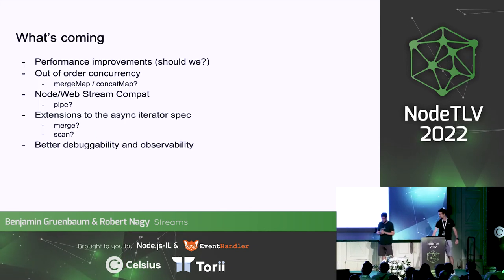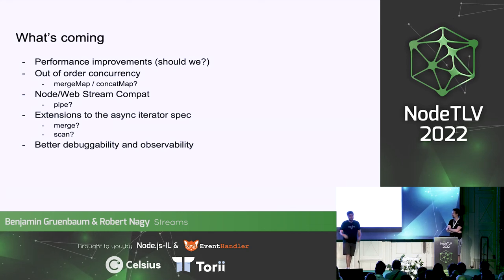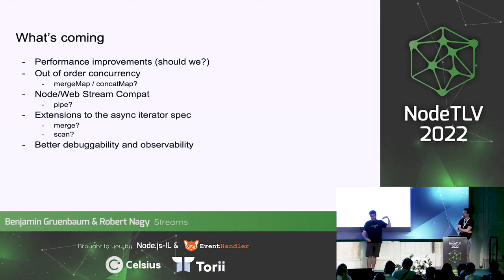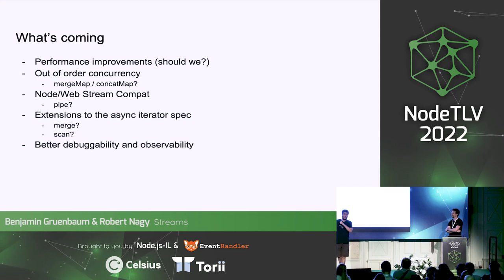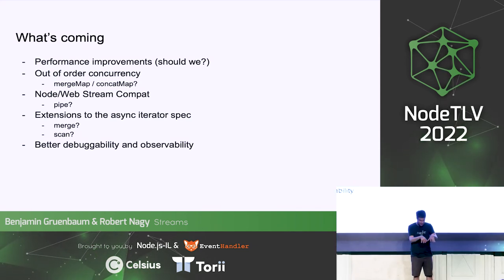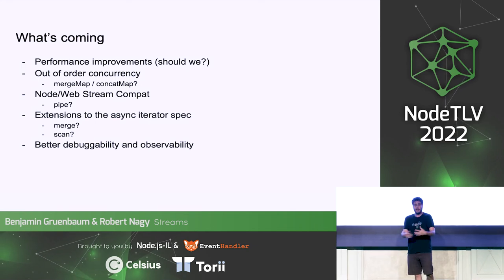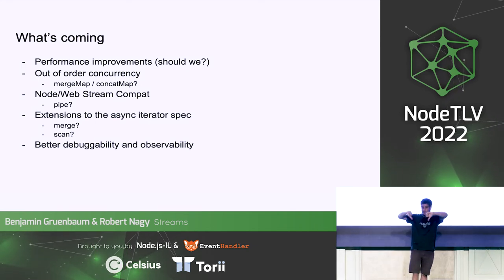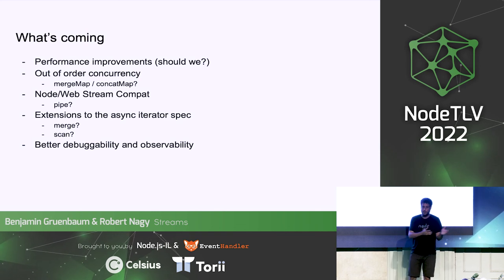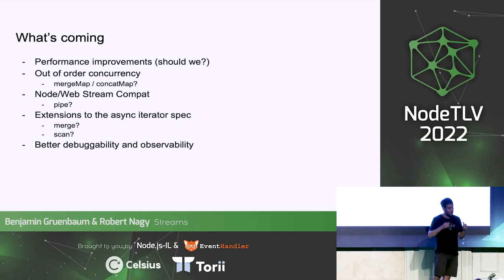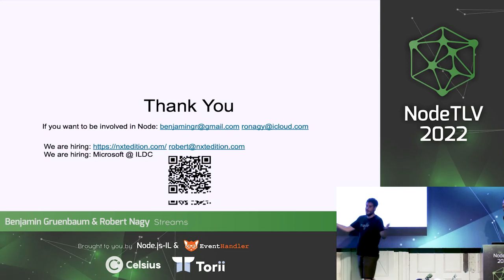What's coming: a ton of possible extensions, compatibility between Node streams and web streams, debuggability, and observability. One key point: a lot of this work is driven by your feedback. This feature exists because of this conference last year. A lot of stuff in Node.js and web browsers is blocked on developers taking the time to say whether something is a good or terrible idea. If you want to influence Node, just tell us — and if you want to contribute, that's even better. Thank you.